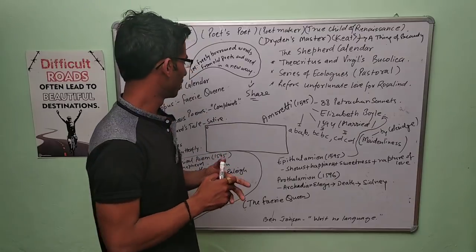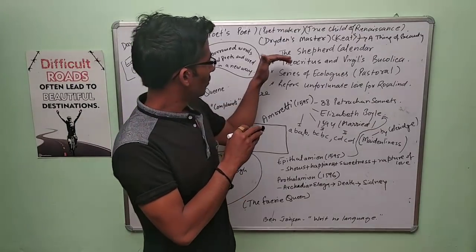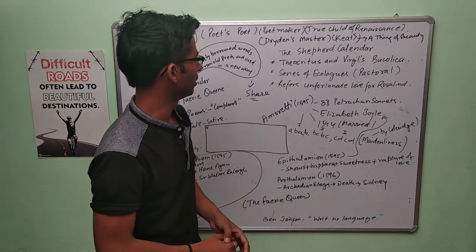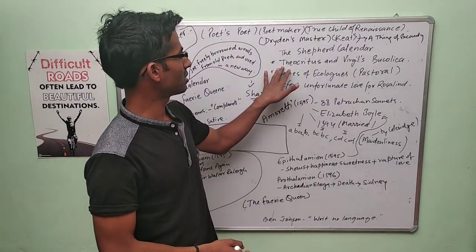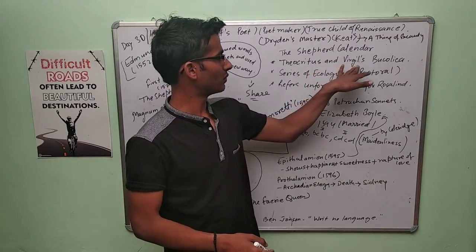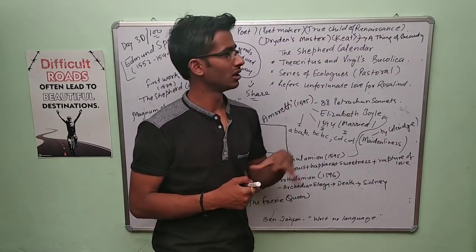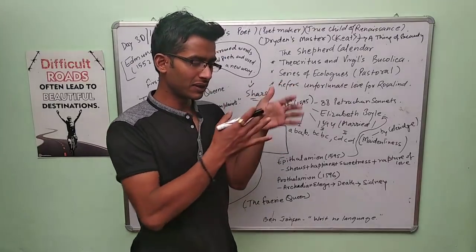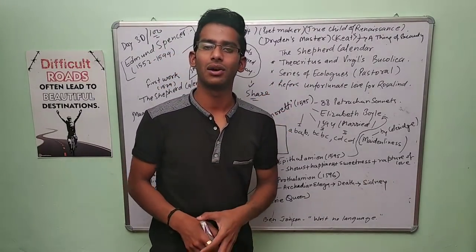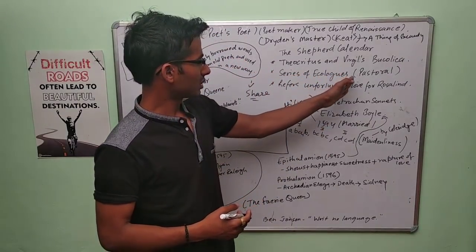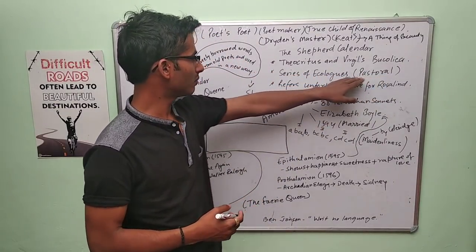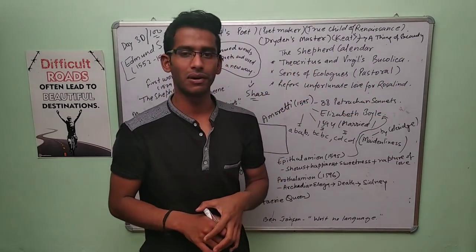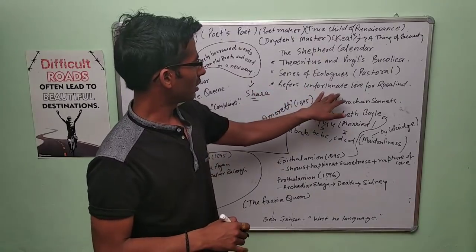What is important in The Shepheardes Calender? It is based on Theocritus and Virgil's Bucolica. This work is a series of eclogues, and it is written in pastoral form, referring to unfortunate love for Rosalind.